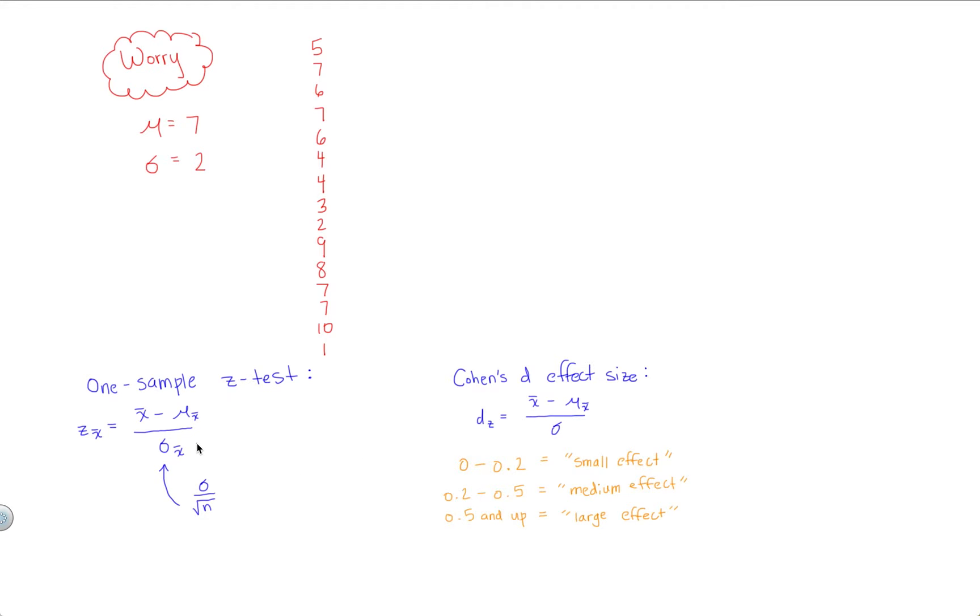In this case, with the z test, the actual hypothesis test, we have standard deviation divided by the square root of your sample size. So this is the key difference, and as I'll talk about in the next video, this makes all the difference. This completely changes how we interpret the hypothesis test versus the actual effect size.